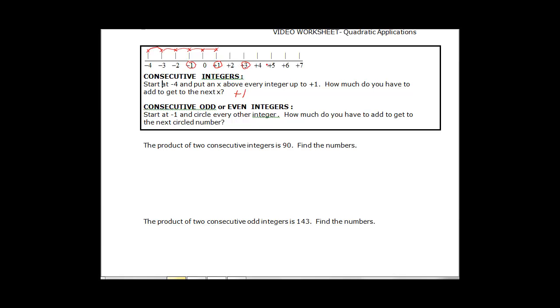skip the 2 go to 3, skip the 4 go to 5, skip the 6 go to 7. Notice those are all odd numbers and to get from one on to the next we had to add 2.